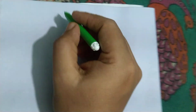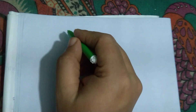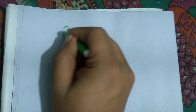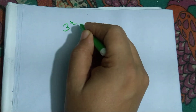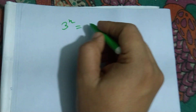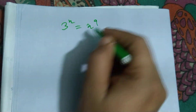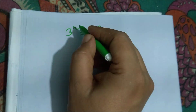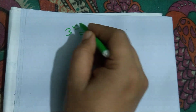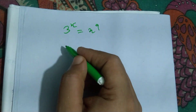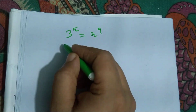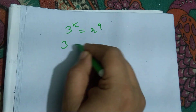Hello dear friends, welcome to my channel. Today's discussion is Olympiad mathematics. We have 3 to the power x to the power 9, so 3 to the power x is equal to x to the power 9.